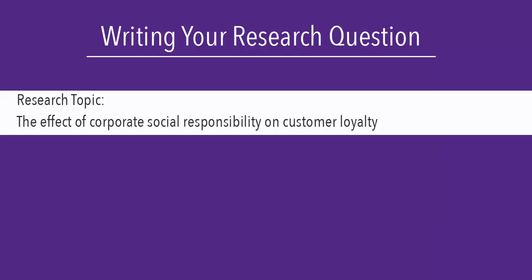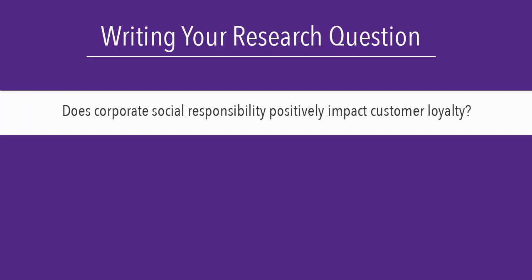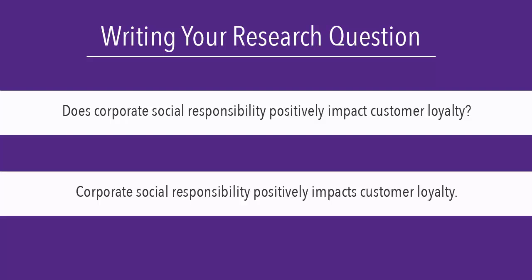The first thing you need to do is write your research topic as a sentence or question. For example, if I'm interested in researching the effect of corporate social responsibility on customer loyalty, my research question might be: Does corporate social responsibility positively impact customer loyalty? Or if I state my topic as a sentence, I might write: Corporate social responsibility positively impacts customer loyalty.